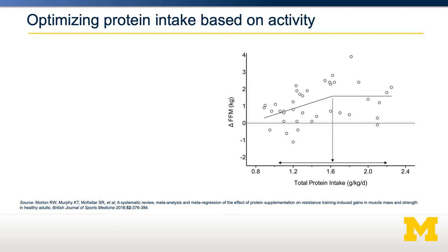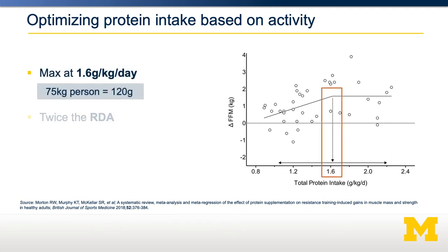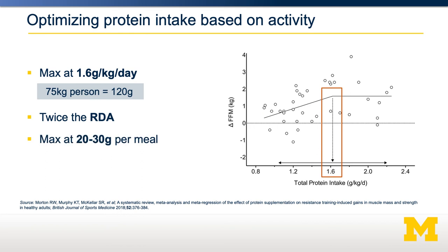Shown here is another example looking at total protein intake on a per-day basis from a large number of studies, where each dot represents a different study. They were trying to answer a similar question: how much protein should somebody consume to optimize increase in lean mass? The y-axis shows change in fat-free mass, and the x-axis shows the amount of protein provided. What you can see is there becomes a maximum at around 1.6 grams per kilogram per day — about twice the recommended daily allowance. This is why some say the RDA is far too low for someone actively trying to increase muscle mass. This must be balanced by the fact that our maximum per meal is about 20 to 30 grams of protein, meaning we may need four to six 30-gram servings per day to meet the 1.6 g/kg/day limit.